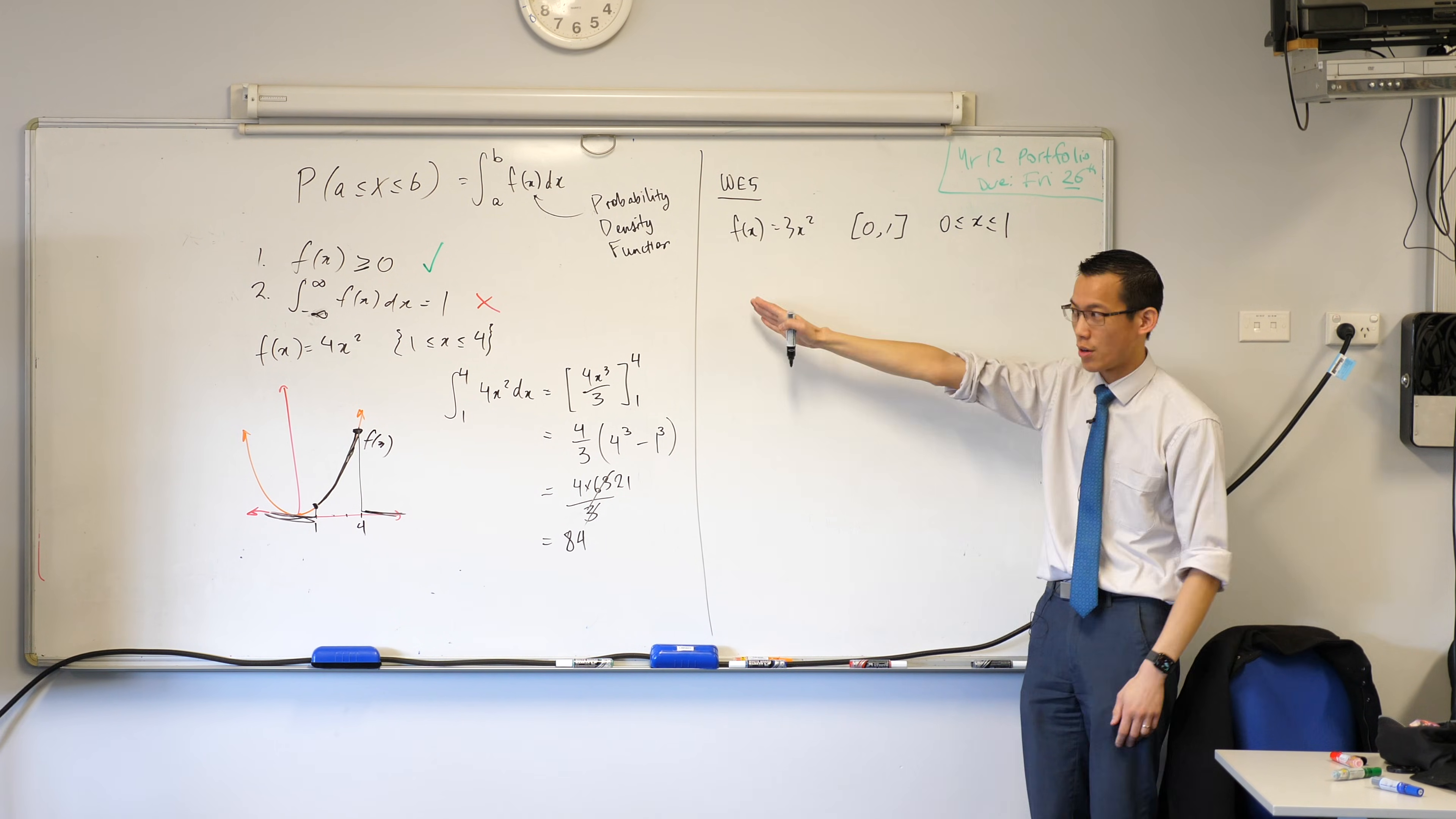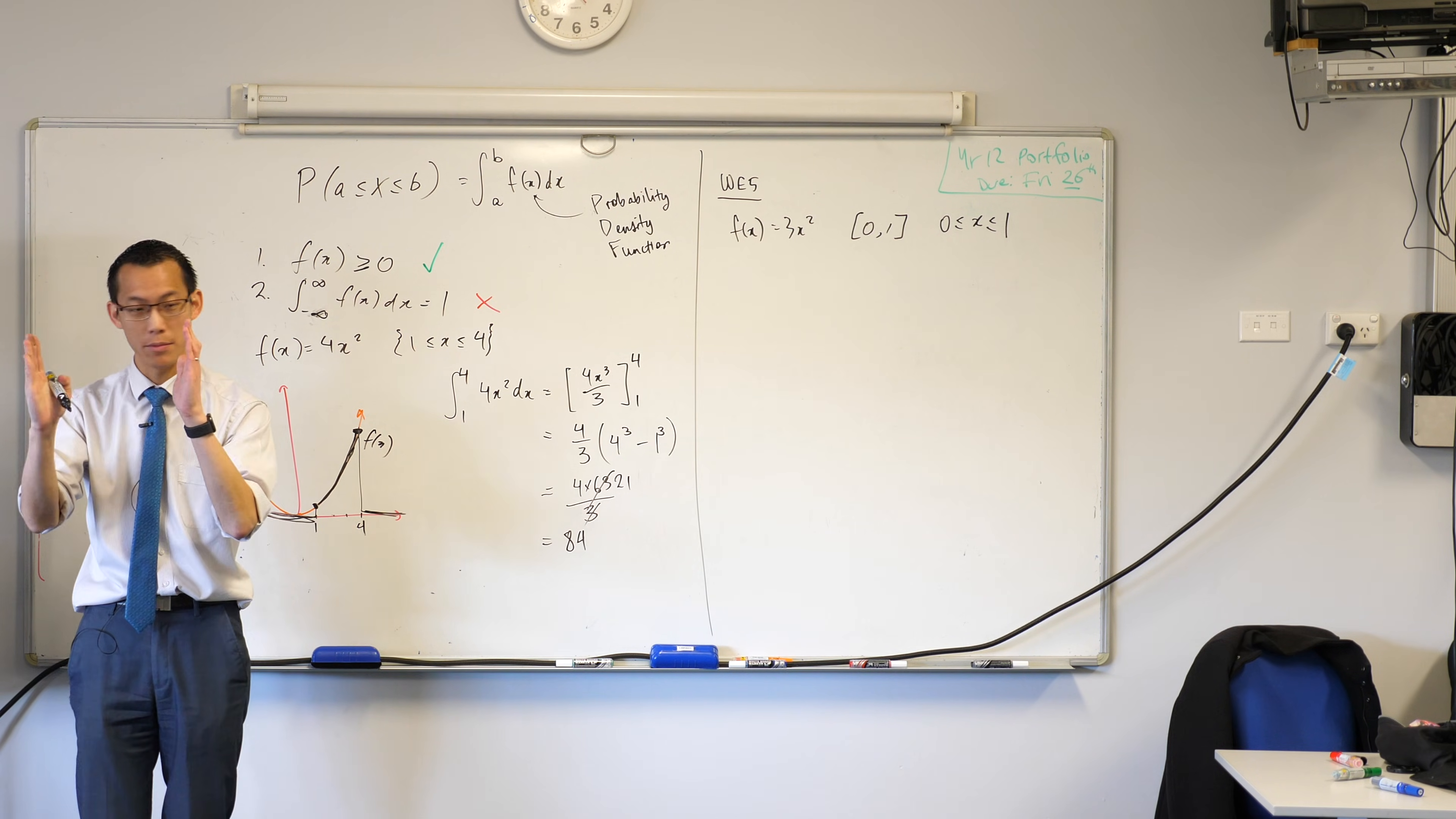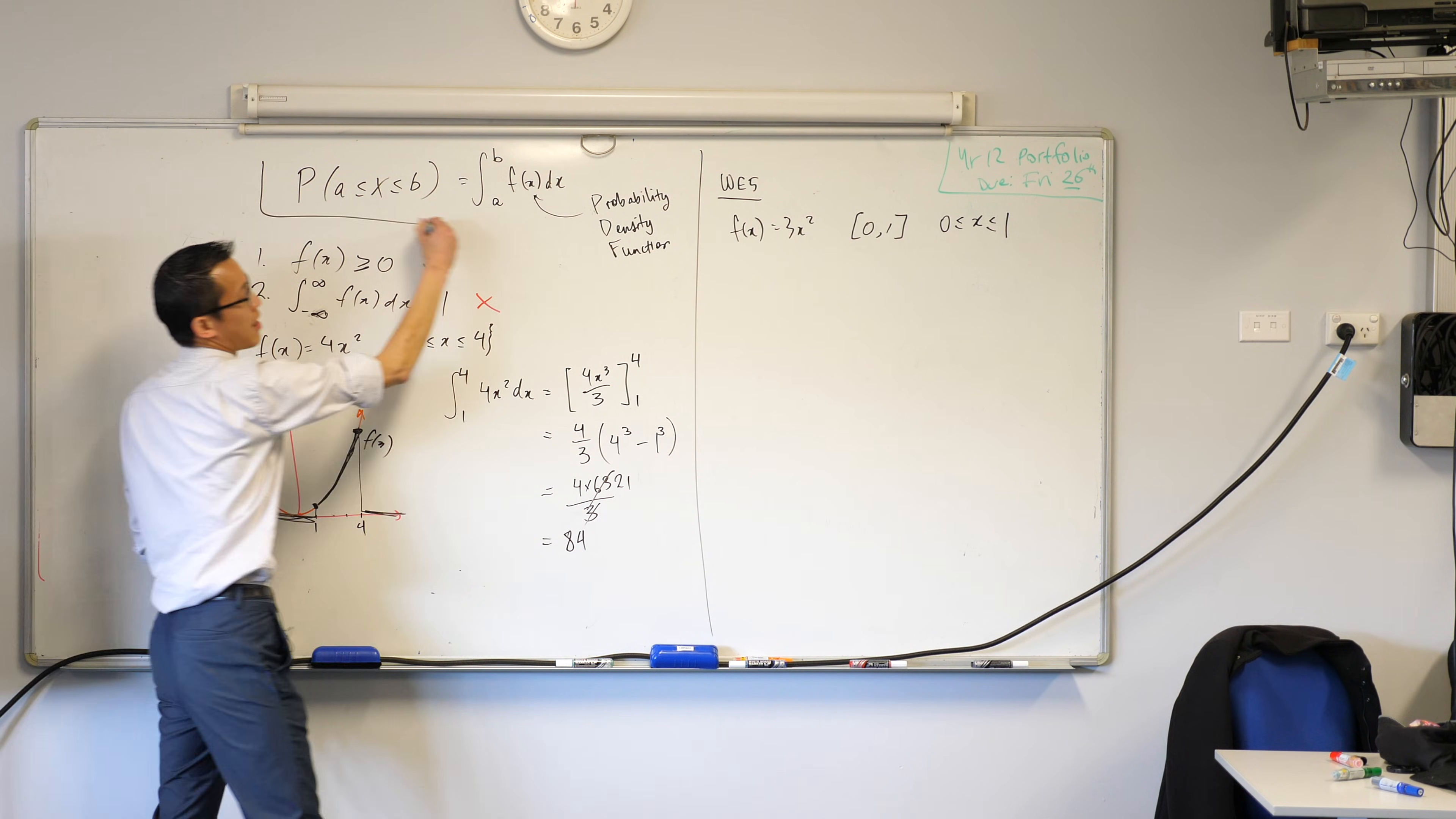So they're telling us that it works on here. What does the question actually ask? It says what is the probability of this particular x value being between half and what? Inclusive.